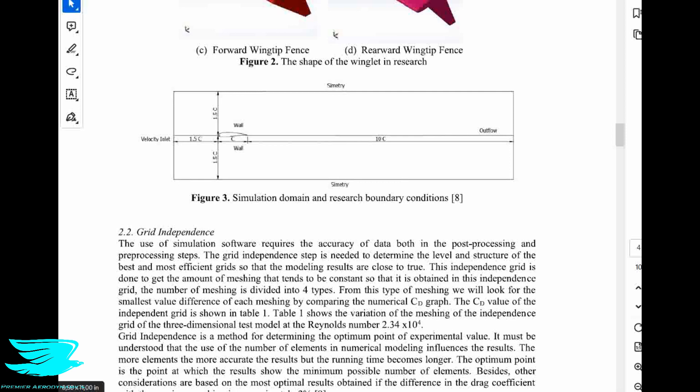They tried hard to achieve a Y-plus of around one, which is impressive, though somewhat ironic — at this low Reynolds number and laminar flow regime, it isn't as critical as it would be in transitional flow. The irony is that many other studies examining transitional regimes fail to achieve Y-plus of one when it truly matters. They used a k-omega SST turbulence model, for which Y-plus below five is required and one is ideal, which explains the effort invested.